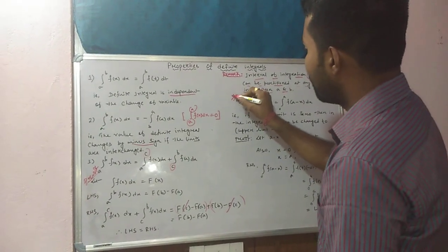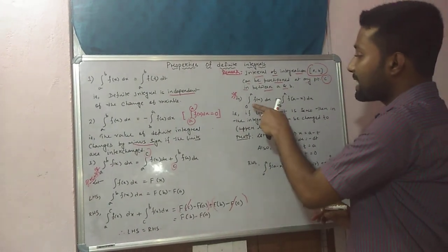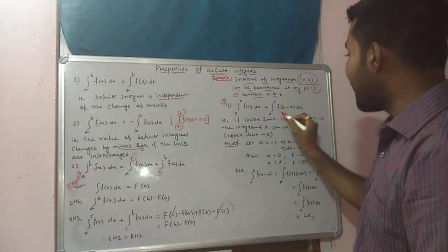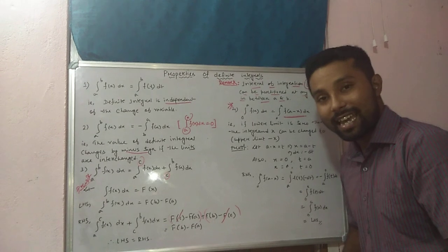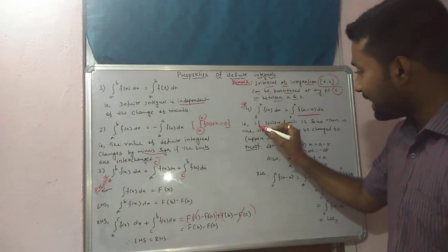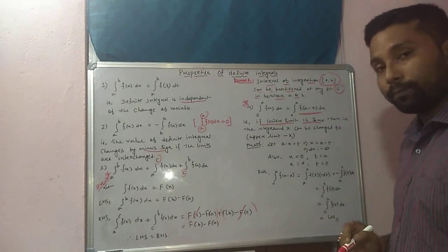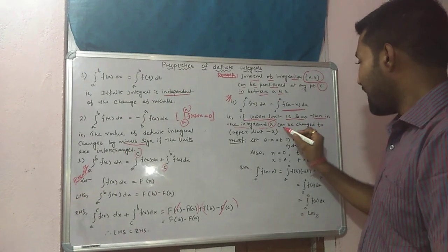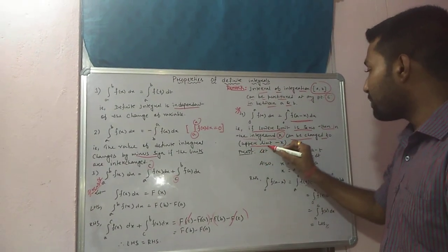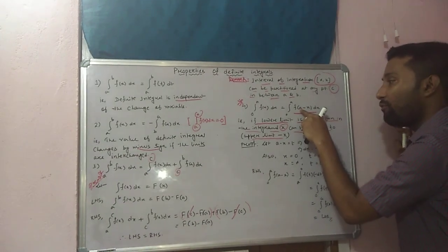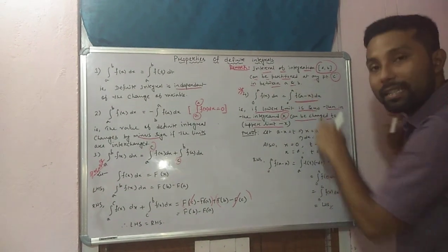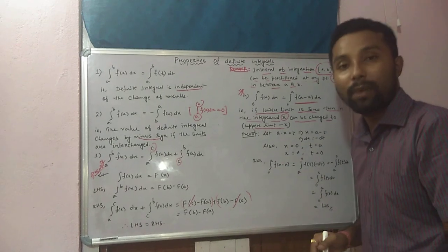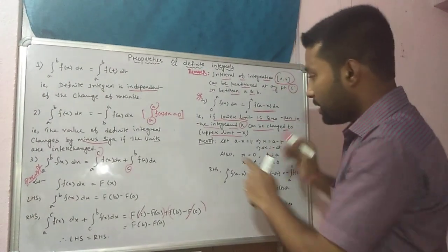Now property number four, which is a very, very useful property. Integration 0 to a of f(x) dx equals integration 0 to a of f(a minus x) dx. The lower limit is fixed at 0. This means: if the lower limit is 0, then in the integrand, x can be changed to the upper limit minus x. So f(x) can be written as f(a minus x), where a is the upper limit. If the lower limit is exactly 0, then we can use this property.